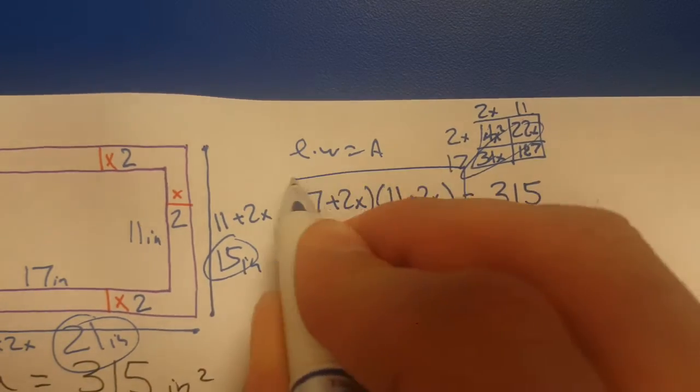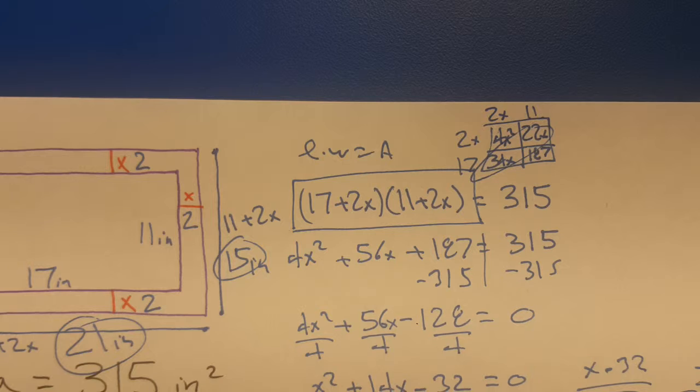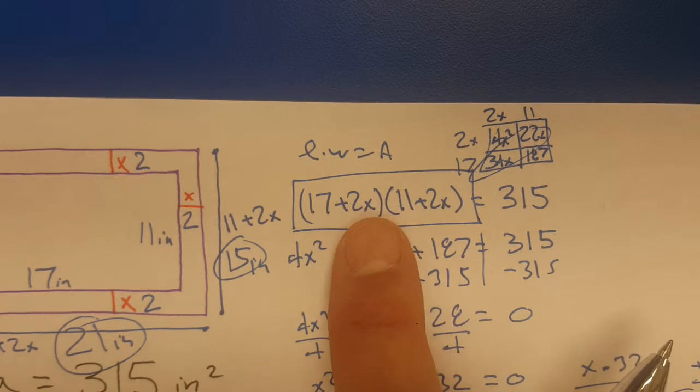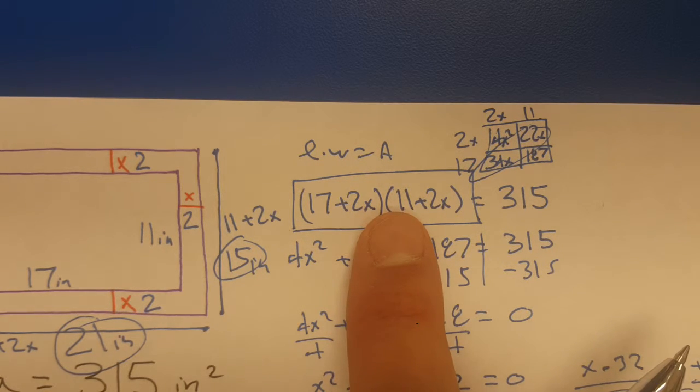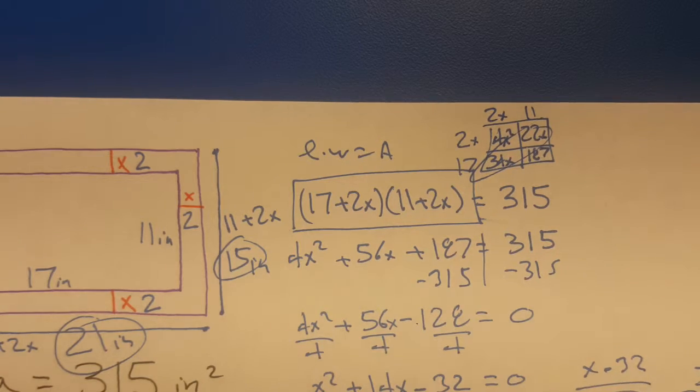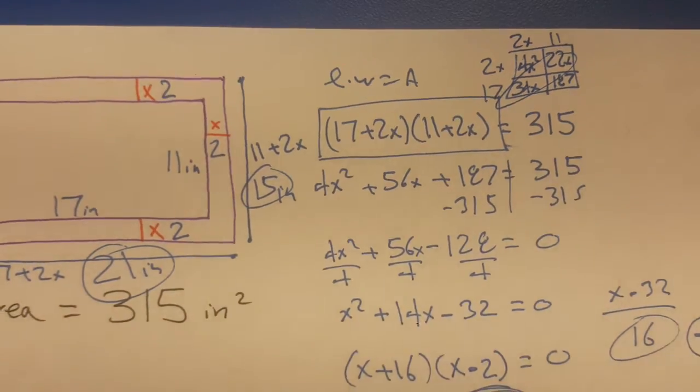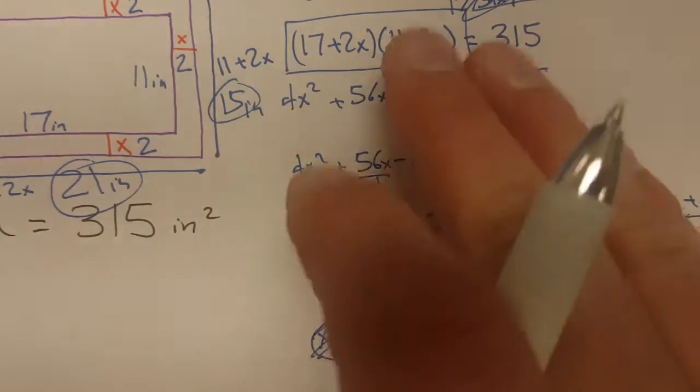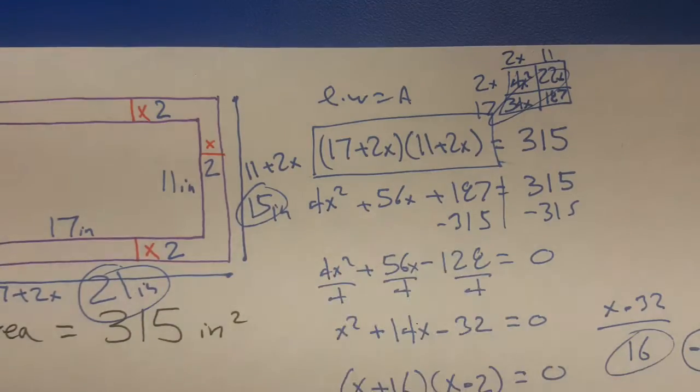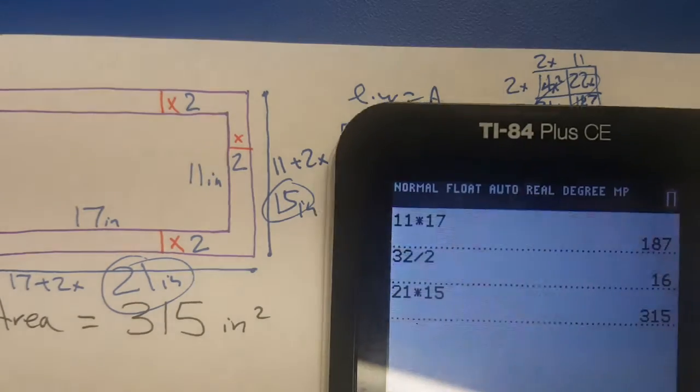The best method is to put this in your calculator. Put that in as a function, y equals this, and then you go to the table and you guess and check until you hit 315. That's the efficient way to get the answer. This algebraic way takes a lot of time, a lot of steps, but you can find the answer in seconds, just depends how good you are with the calculator.